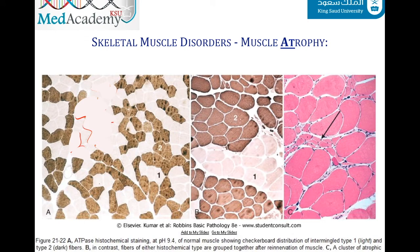If motor neuron A also becomes injured and no other motor neurons can supply those muscle fibers, the fibers will not be re-innervated and will undergo group atrophy, as shown in the corresponding histological image.